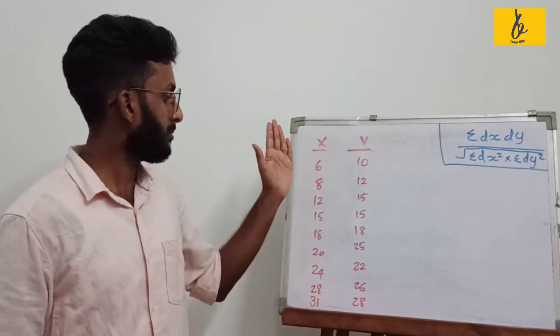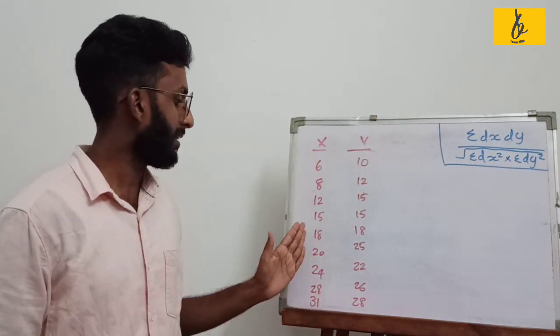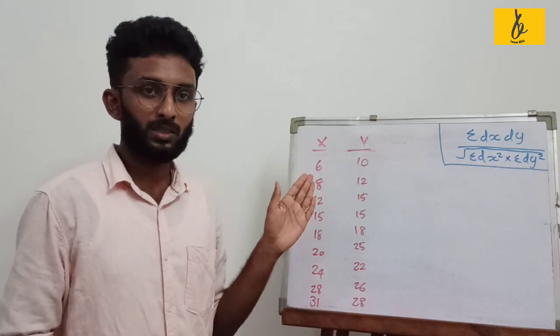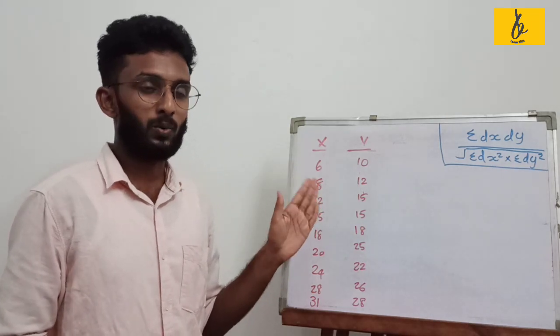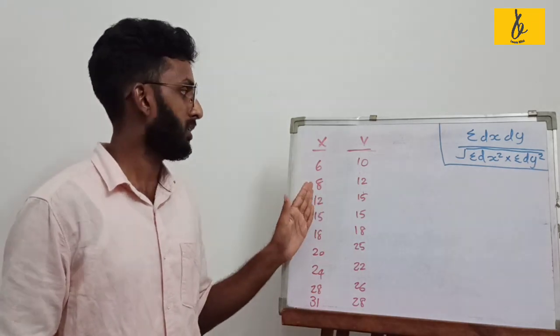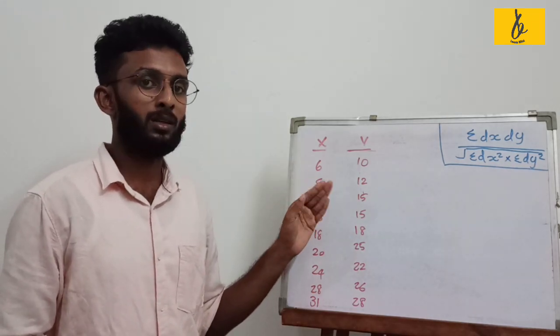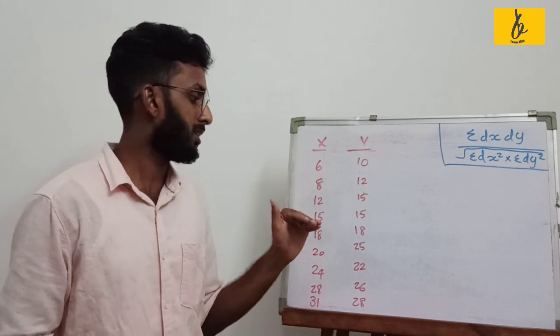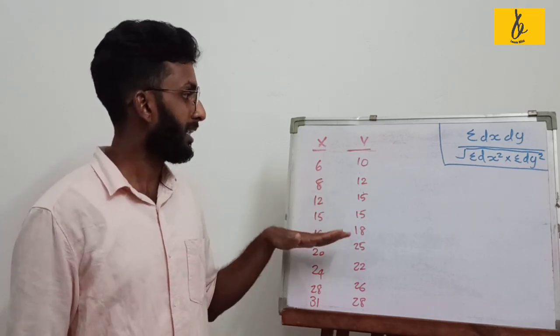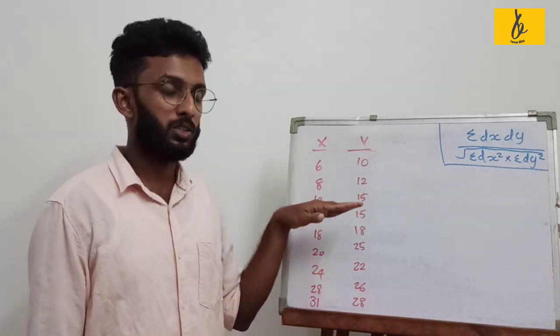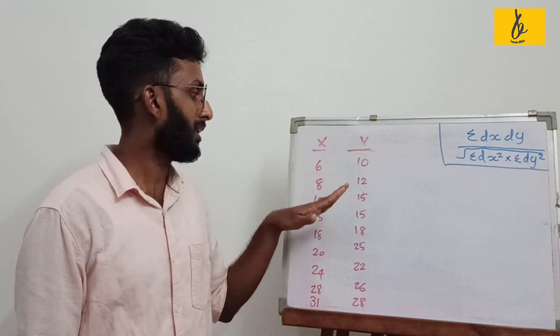This is the question. This is called Pearson's correlation coefficient. This is the direct method — the direct method is used for Pearson's correlation coefficient.